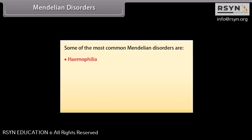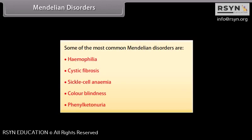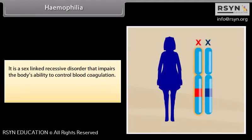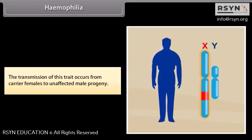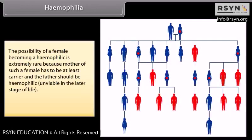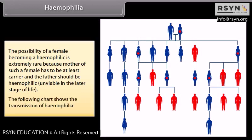Some of the most common Mendelian disorders are haemophilia, cystic fibrosis, sickle cell anemia, color blindness, and phenylketonuria. Haemophilia is a sex-linked recessive disorder that impairs the body's ability to control blood coagulation, caused by deficiency of certain clotting factors. The transmission occurs from carrier females to unaffected male progeny. A female becoming haemophilic is extremely rare, as the mother must be at least a carrier and the father must be haemophilic. The following chart shows the transmission of haemophilia.